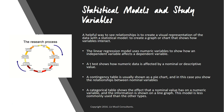Statistical models and study variables: a helpful way to see relationships is to create a visual representation of the data with a statistical model — a graph or chart that shows how variables interact. The appropriate model depends on whether the data uses numeric or nominal variables and whether those variables are dependent or independent. The standard models you will encounter are linear regression, t-test, contingency table, and categorical table. The linear regression model uses numeric variables to show how an independent variable affects a dependent variable. For example, you could show that cost affects train ridership — you'd plot a line graph with ticket costs on the y-axis and number of riders on the x-axis, and the line would slope down to show that ridership decreased as prices rose.